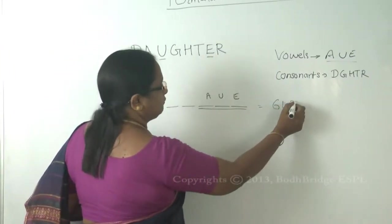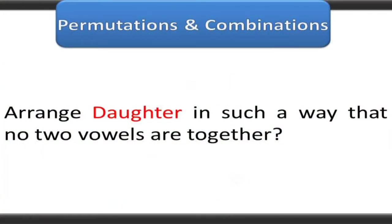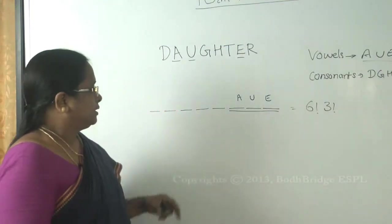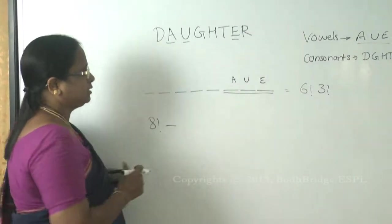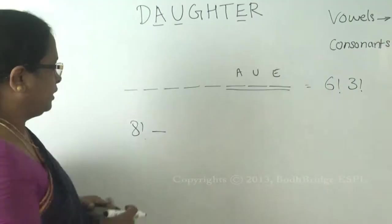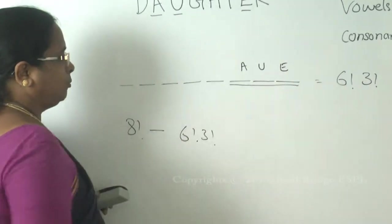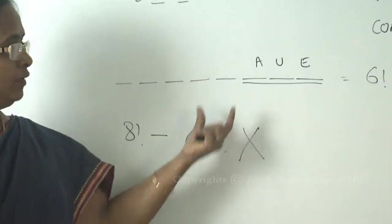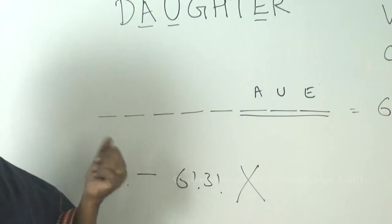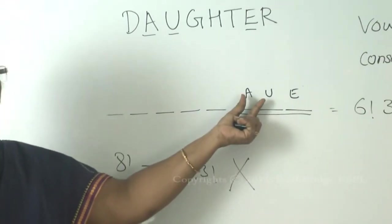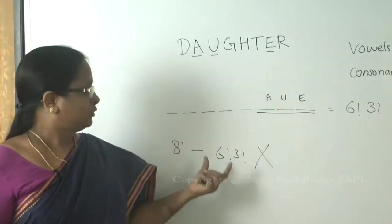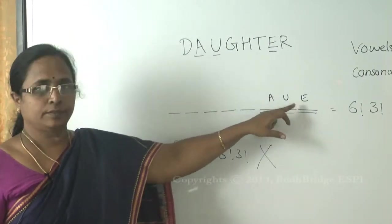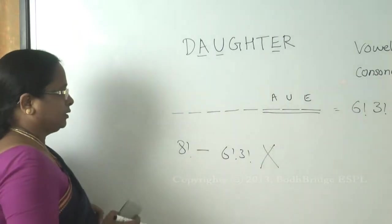The next question: arrange 'daughter' such that no two vowels are together — meaning all vowels are separated. You might think to compute eight factorial minus six factorial times three factorial, but this is wrong. The reason: you are only removing cases where all three vowels are together, but it's possible that two vowels like A and U are together with E separated, or U and E together with A separated. Those cases are not removed, so you cannot do it this way.